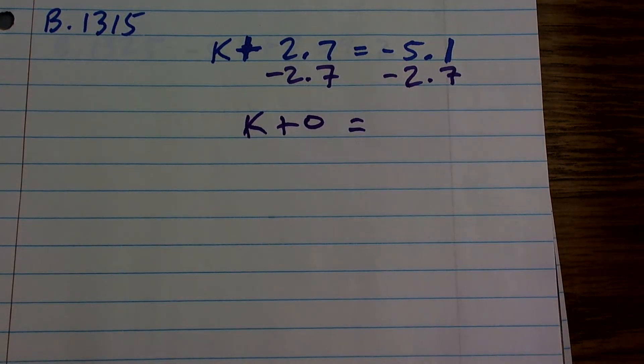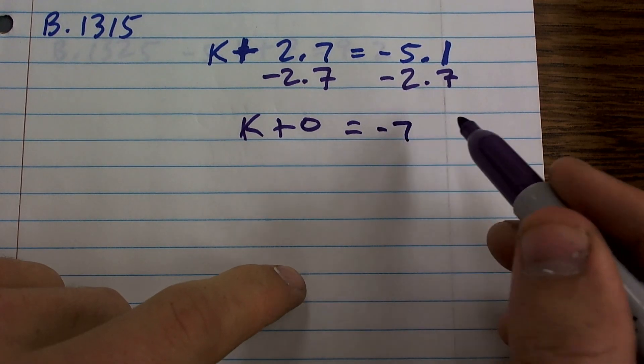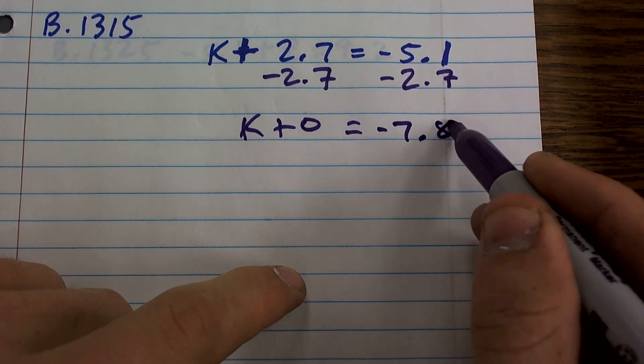Now, a negative 5.1 minus 2.7 is going to give me a negative 7.8.